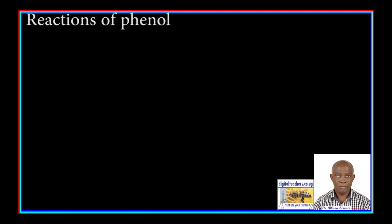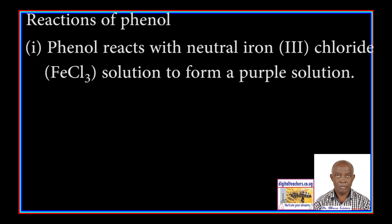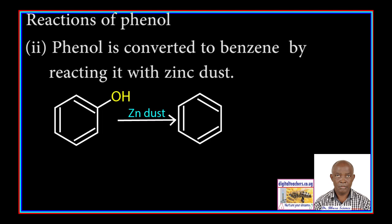Reactions of phenol: Phenol reacts with neutral ferric chloride to form a purple solution. This reaction is used to identify phenol. Phenol is also converted to benzene by reaction with zinc dust.